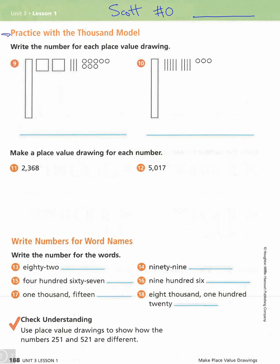On this side, we're going to practice with the thousands. They've added a thousands representation — it's like a big, fat ten-stick. A flat square equals 100, but if you make it three-dimensional like a cube and glue ten of those together, that equals 10 hundreds, which is 1,000. Instead of drawing the cube, they use these big long fat sticks to represent a thousand.